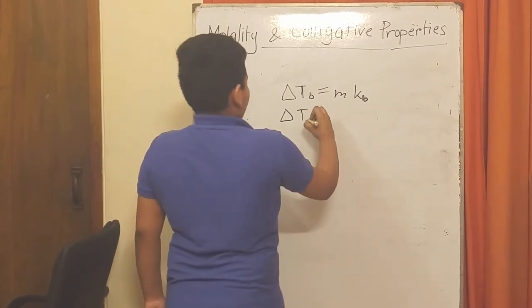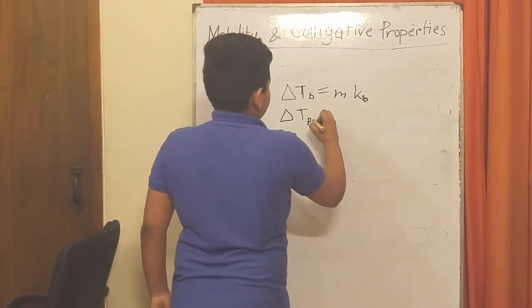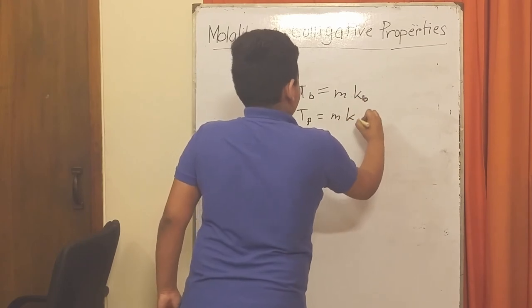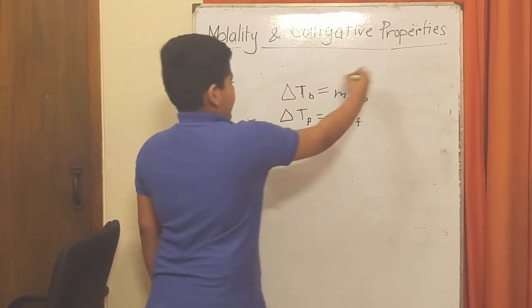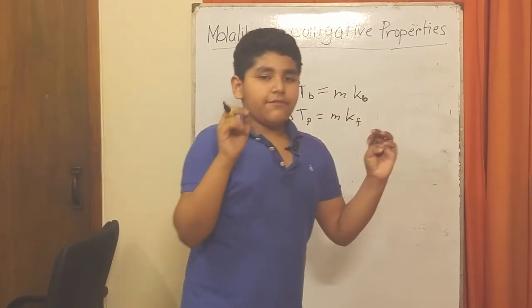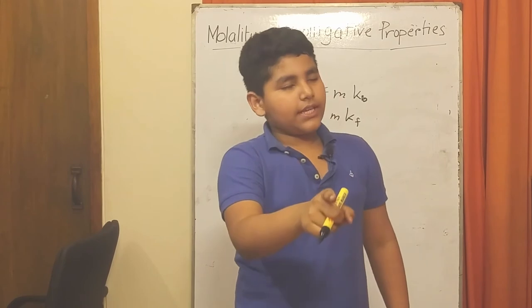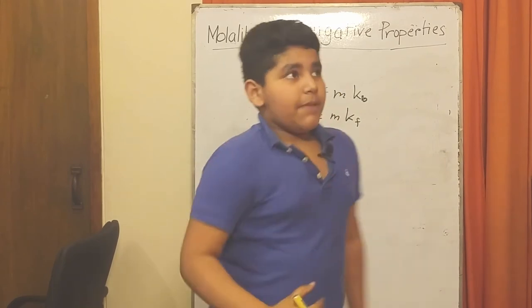The formula for the freezing point change uses kf and molality. For these constants kb and kf, let's go back on the phone because Google can explain it better than me.